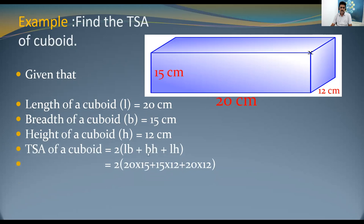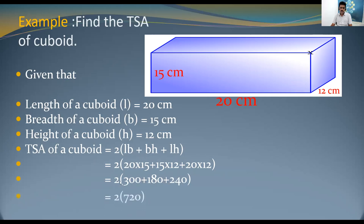Substituting the values: 2(20×15 + 15×12 + 20×12). Simplifying: 20×15 = 300, 15×12 = 180, 20×12 = 240. Adding these: 300 + 180 + 240 = 720. Then 2 × 720 gives us 1440.